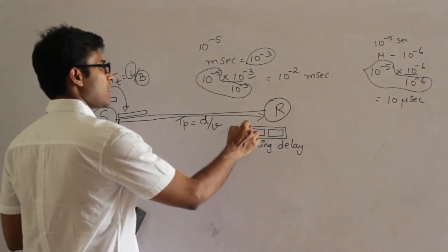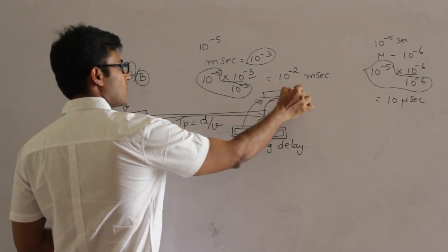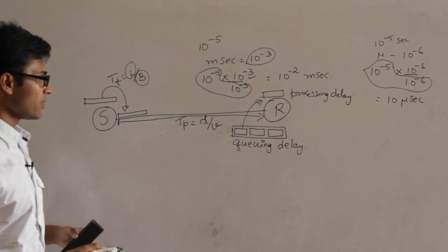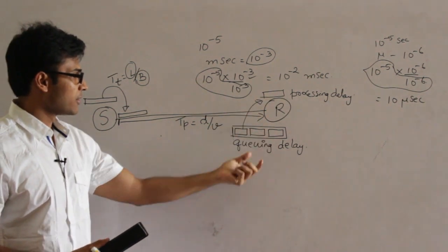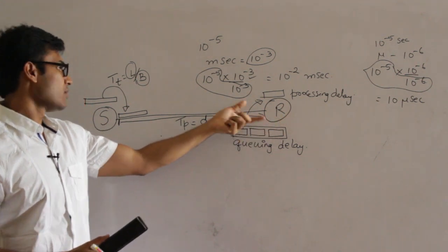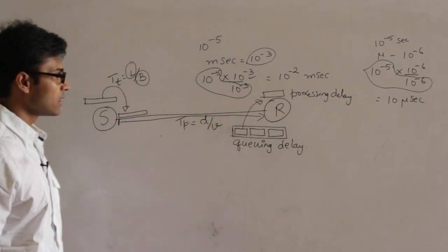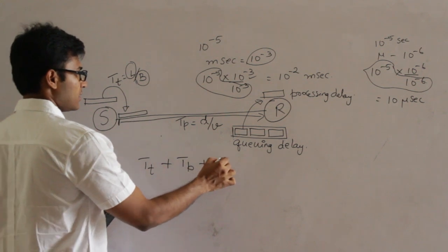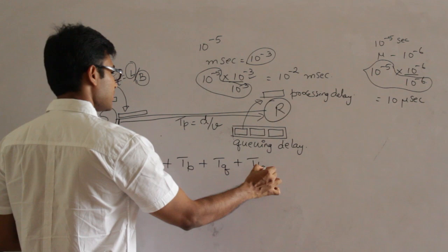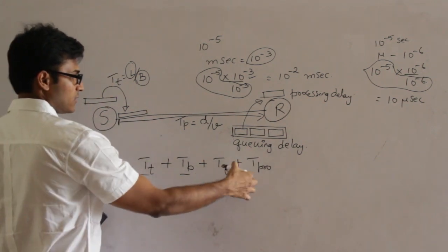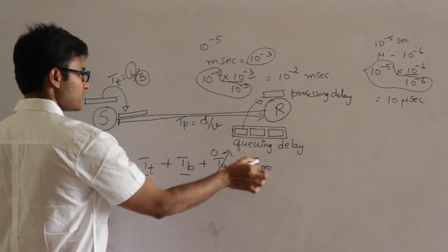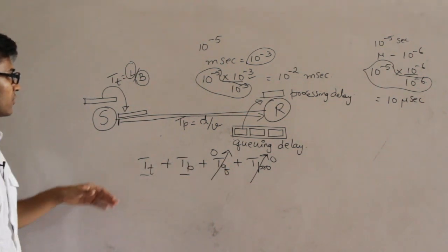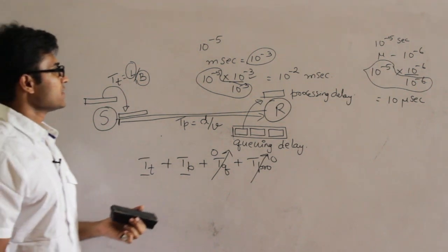After waiting in the queue, the packet is taken and processed by the receiver — the time for this is called processing delay. Processing delay also has no formula; it depends on the speed of the processor. Both queuing delay and processing delay depend on processor speed. In summary, the four delays in computer networks are: transmission delay, propagation delay, queuing delay, and processing delay. For numericals, only the first two have formulas; the last two are assumed to be zero.